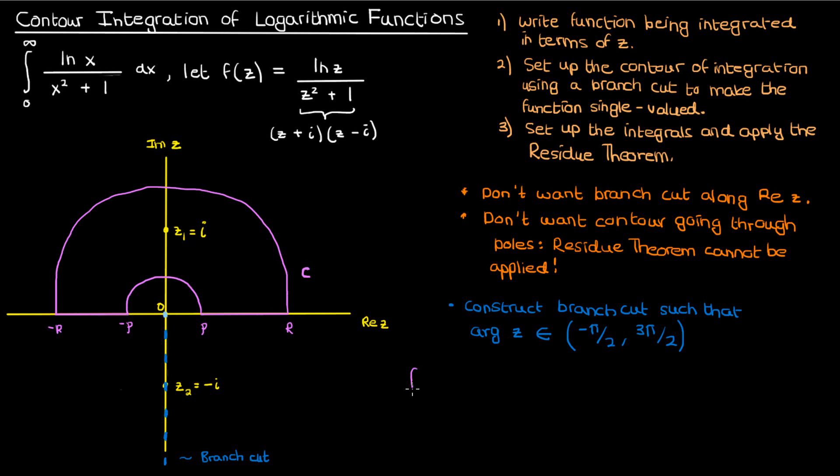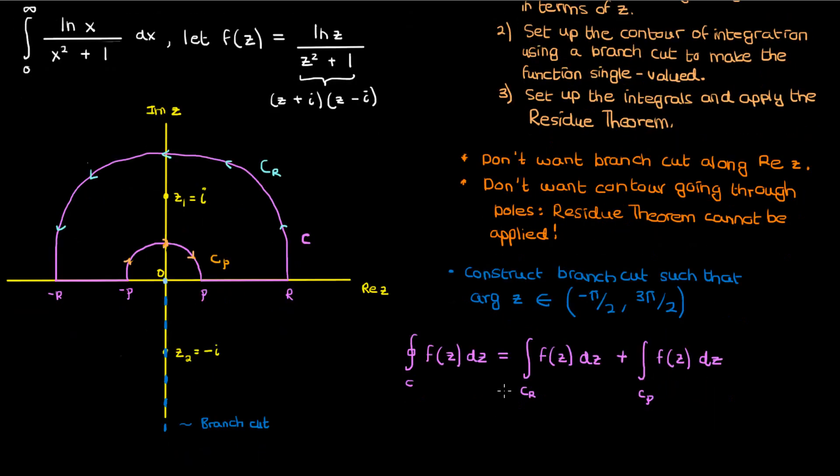The contour integral over this closed curve C is then the sum of the integrals over these semicircular arcs which I'll call C sub R and C sub rho, the C sub rho integral is clockwise, plus the integrals over the real axis from negative R to negative rho and from rho to capital R.